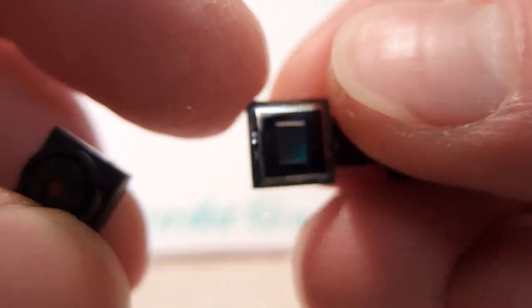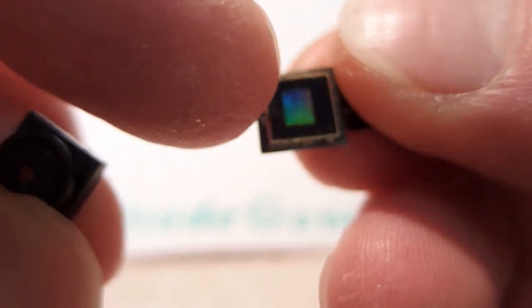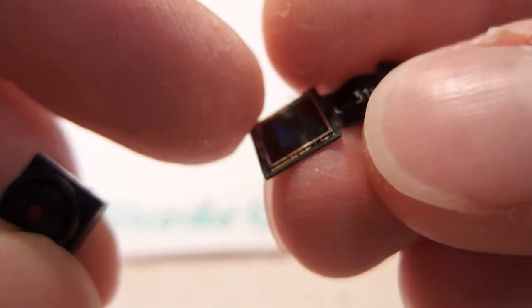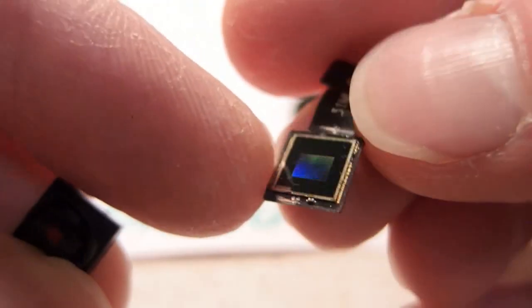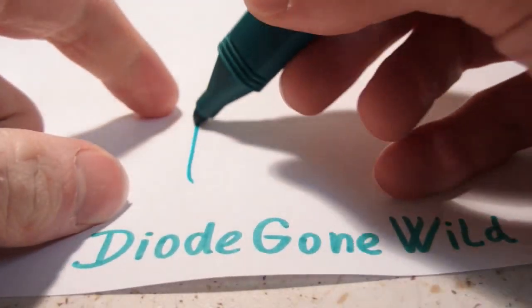This CMOS sensor will convert the picture to data. There's an array of sensitive cells.